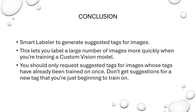What did we learn from this question? The smart labeler tool is used to generate tags for images, letting you label a large number of images more quickly when training a custom vision model. The key catch is: you should only request suggested tags for images whose tags have already been trained on once — don't get suggestions for a new tag that you're just beginning to train on. For more questions and videos, please subscribe to the channel and like this video. Thank you.